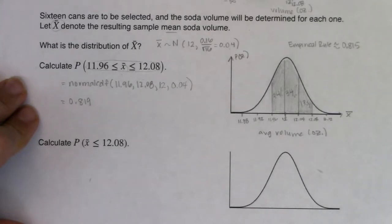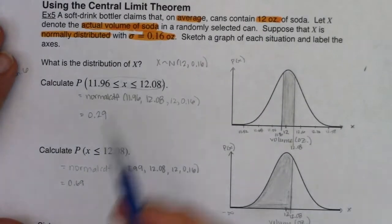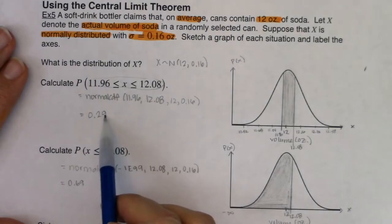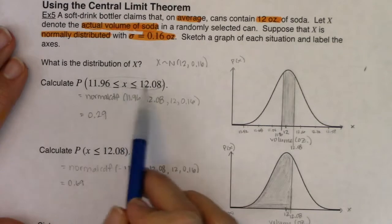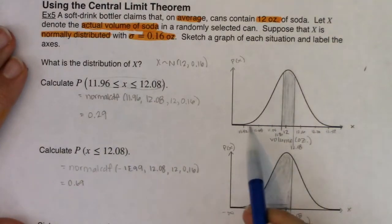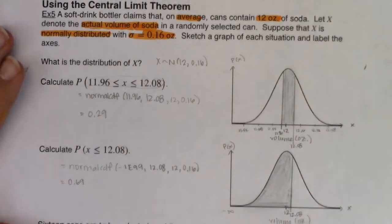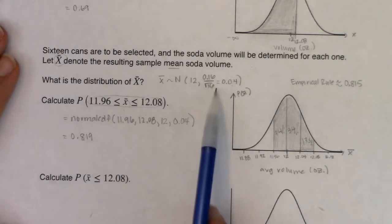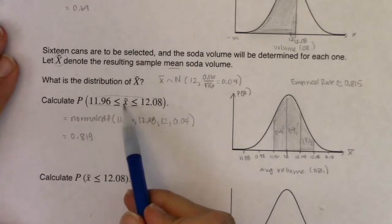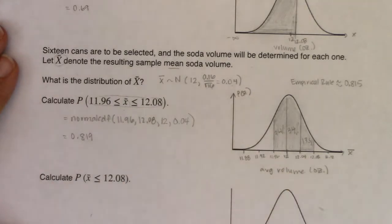I want you to notice that this probability is a lot larger than the one we found up top. What that's saying is: if you're looking at one can, there's only about a 30% chance that one can will have between 11.96 and 12.08 ounces — because they're more variable. It's not as rare for one can to have a soda volume of 11.68 or 12.32. But as sample size increases, variability decreases. If you're looking at 16 cans and their average, those averages don't vary that much. The average of 16 cans doesn't move that much — that's why the spread is so much smaller.